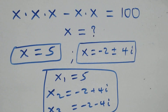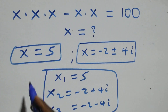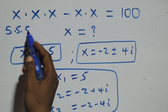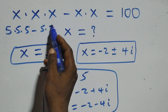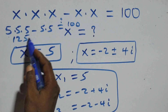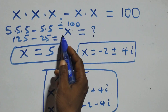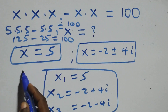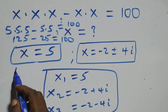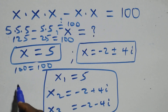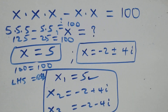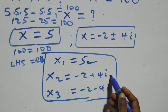We can check if these satisfy the given problem. When x equals to 5: 5 times 5 times 5 minus 5 times 5 equals 125 minus 25, which is 100. The left hand side equals the right hand side, so x equals to 5 satisfies the given problem. When we check the other two complex solutions, these will also satisfy. Thank you for watching.